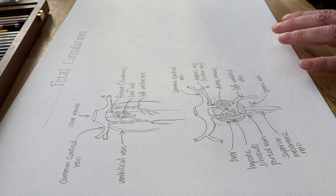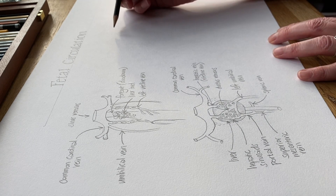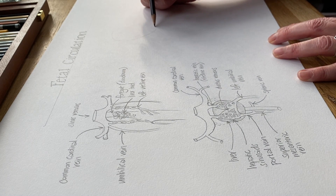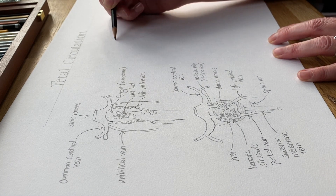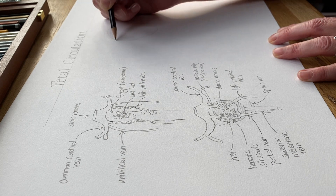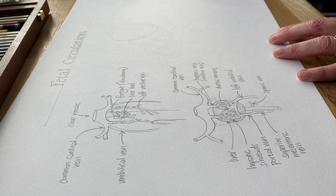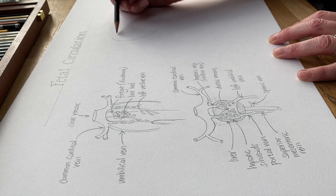That focus on the veins is important because now we know where the oxygenated blood comes from that enters the embryonic and eventually the fetal circulation. Remember: the difference between an embryo and a fetus is just one of timing — we call it an embryo up until eight weeks of development, and after that it's a fetus.